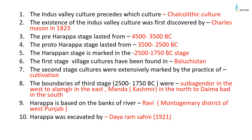The Indus Valley culture precedes the Chalcolithic culture. The existence of Indus Valley culture was first discovered by Charles Mason in 1823. The pre-Harappan stage lasted from 4500 to 3500 BC. The proto-Harappan stage lasted from 3500 to 2500 BC, and the Harappan stage is marked from 2500 to 1750 BC.